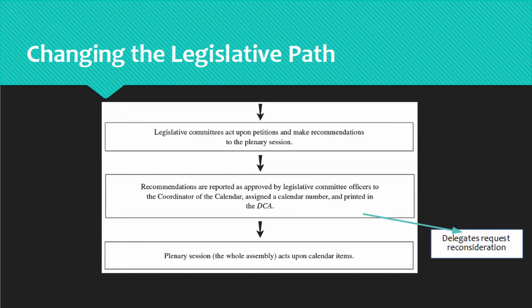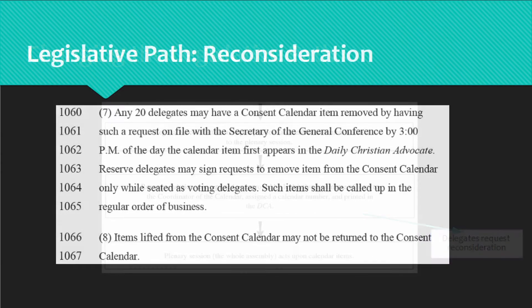The committee may place a legislative item on the Consent Calendar that you want to be debated in plenary, either because you think it should be voted down or because you think it needs amendment before it is approved. In that case, have twenty delegates sign a request and submit it to the Secretary of the General Conference. The deadline is three o'clock on the day that the item appears on the Consent Calendar in the Daily Christian Advocate. Once a petition is lifted from the Consent Calendar, it cannot be returned to the Consent Calendar. General Conference is required to take a vote on every petition that has been supported by a legislative committee, which includes items lifted from the Consent Calendar.